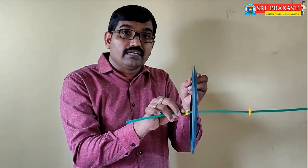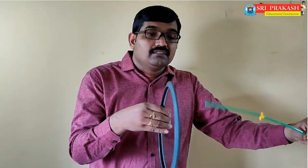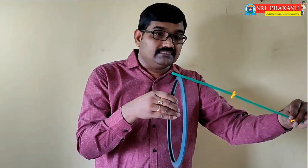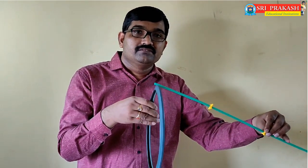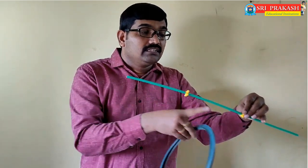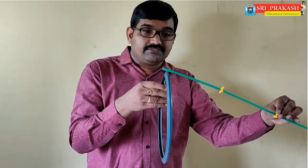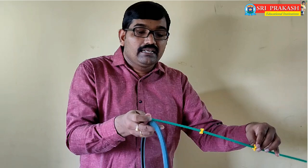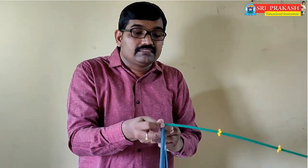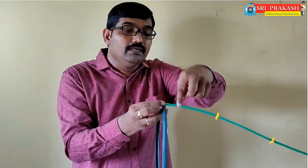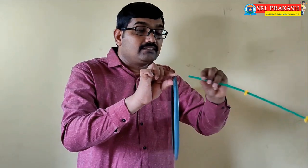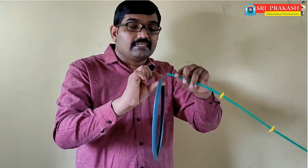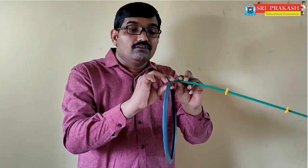An important point to analyze: from a point on the axis, any point on the current-carrying circular coil will be at the same distance. That point is at the same distance from any point on the circular loop. Also, the radius vector from the coil to the axial point is always perpendicular to the length element dL of the coil - the angle between dL and the radius vector is always 90 degrees.